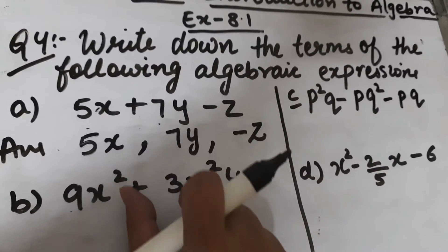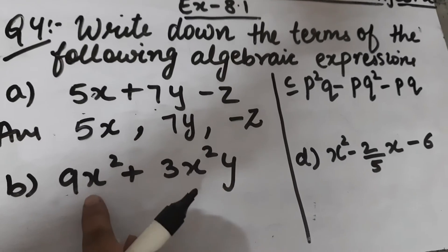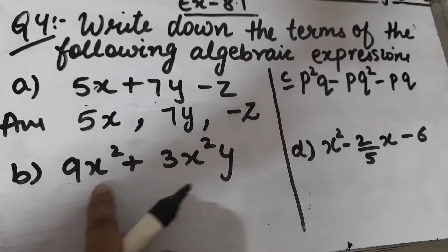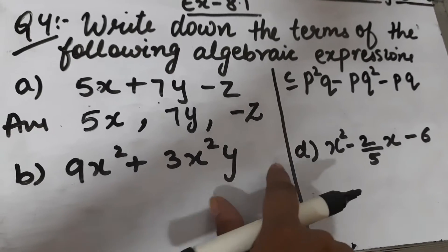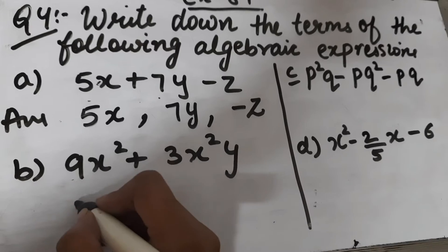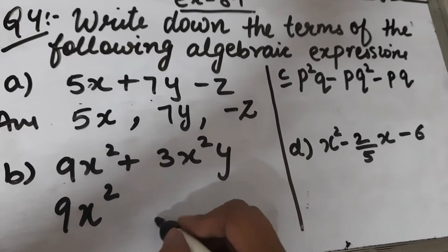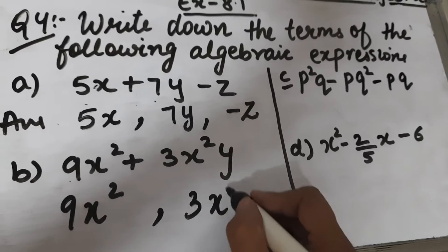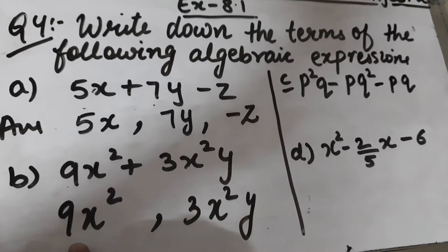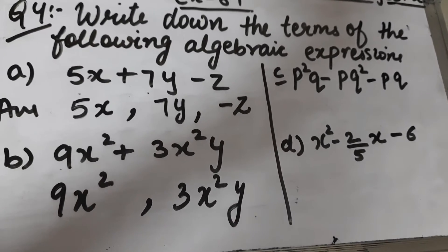Part (b) is 9x² + 3x²y. The terms in this expression are: first term is 9x², and second term is 3x²y, because these two terms are connected by a plus sign.